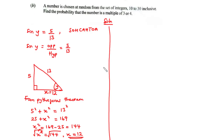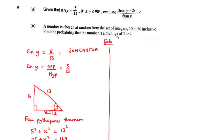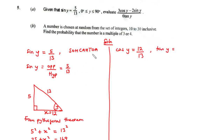Continuing with the solution, we can now figure out the values of cos y and tan y. Cos is adjacent over hypotenuse, so cos y equals 12 over 13. For tan y, that is given by opposite over adjacent, so tan y equals 5 over 12.